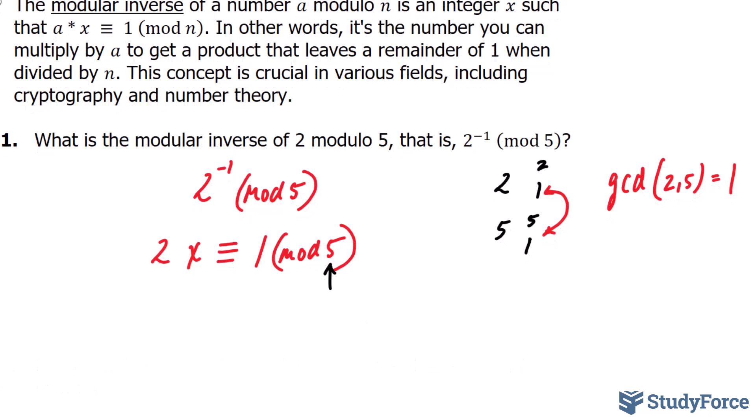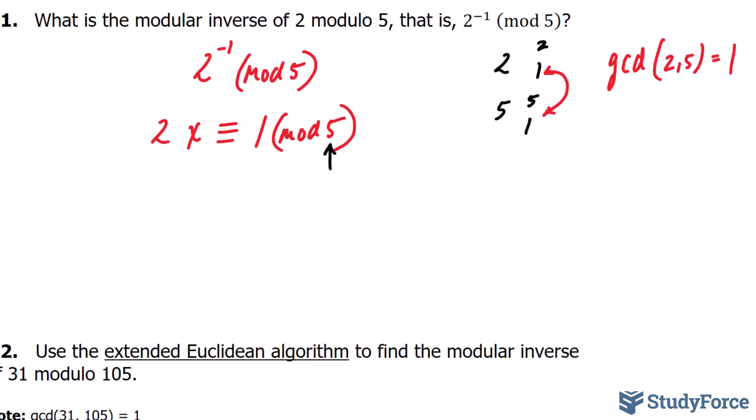Let's apply a simple guess and check method to find out what that value is. Again, in question number 2, we'll be applying the extended Euclidean algorithm instead of guessing and checking. If I set x equal to 1, we get 2 times 1, and that's equal to 2. Now let's divide this 2 by 5. What we're looking for is a remainder of 1. Using long division, 5 does not fit into 2. Subtracting 2 and 0 gives us a remainder of 2, so clearly x cannot equal to 1.